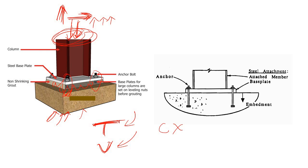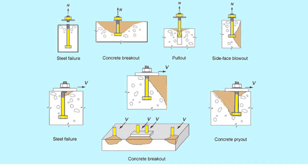Let's start the failure patterns one by one. First, failures due to tension. The first tension failure starts with the failure of the anchor bolt itself: if you do not provide sufficient diameter and strength, the anchor bolt may fail under tensile action — it will simply rupture. The solution is to increase the diameter, or if that is not available, increase the strength of the steel material.